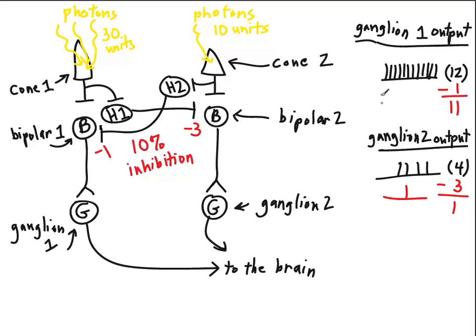If we subtract 1 from 12, we end up with 11. So there would be, instead of having 12 action potentials per second, there would only be 11 action potentials per second.